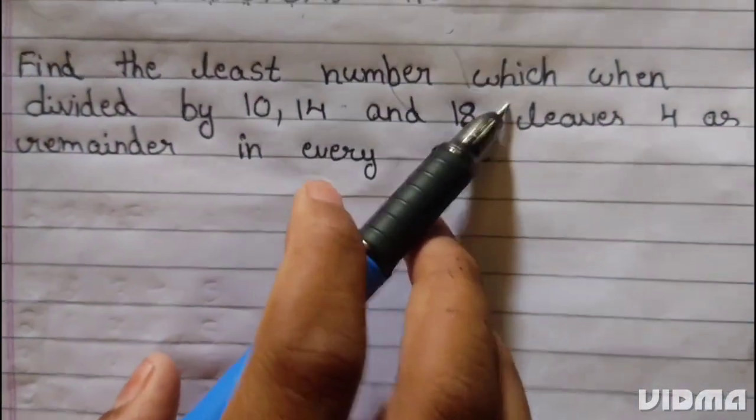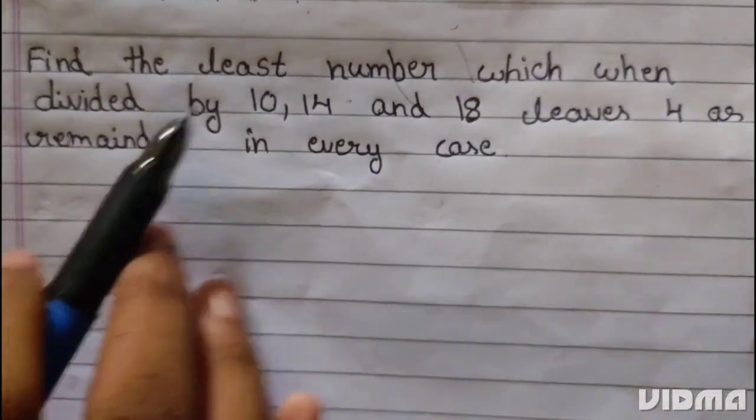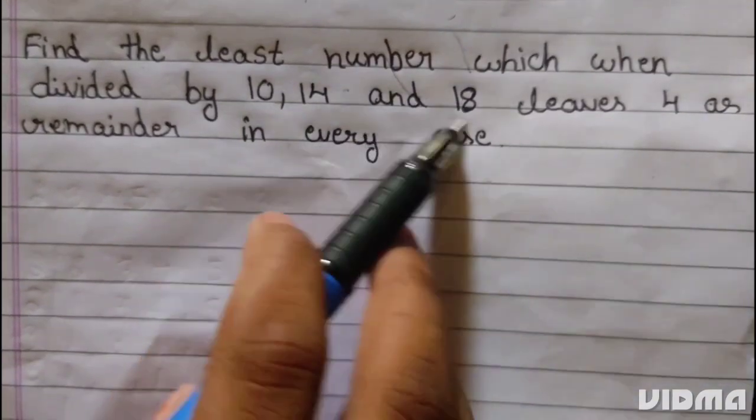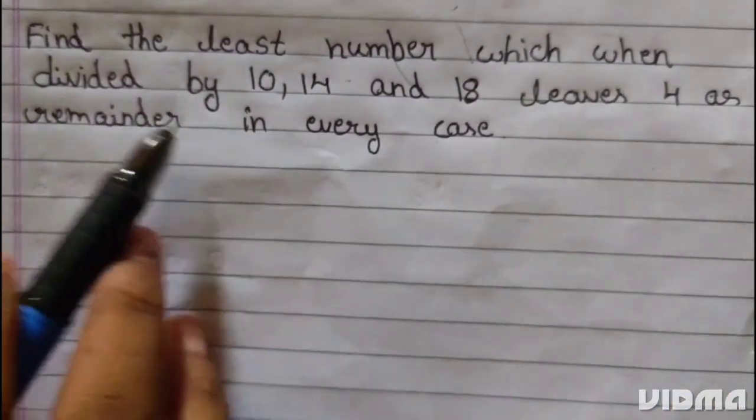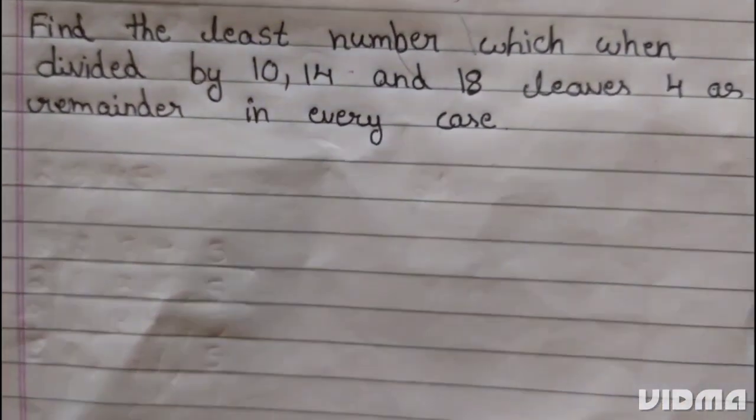Find the least number which when divided by 10, 14 and 18 leaves 4 as remainder in every case.